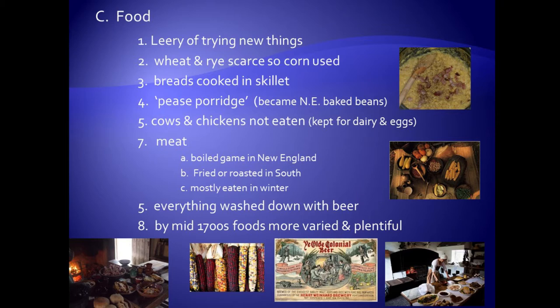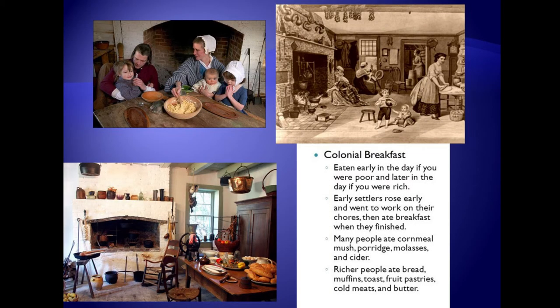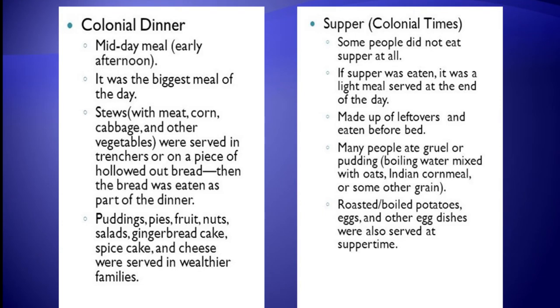By the early to mid-1700s, foods became more varied and more plentiful. On this slide there are a few images of tables set as they would have been in colonial days, with the array of food that would have been available. The next two slides have images of colonial homes, families, and information about meals — colonial breakfast, colonial dinner, supper — and other types of food available depending on whether you were wealthy or poor.